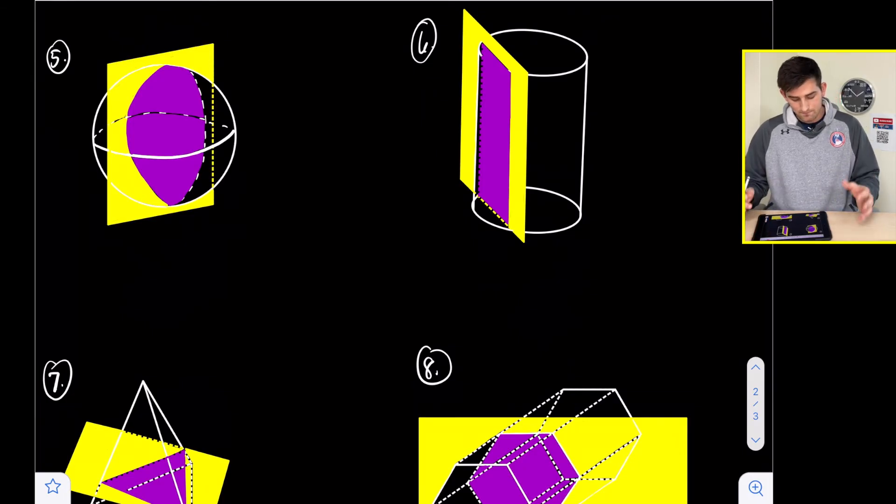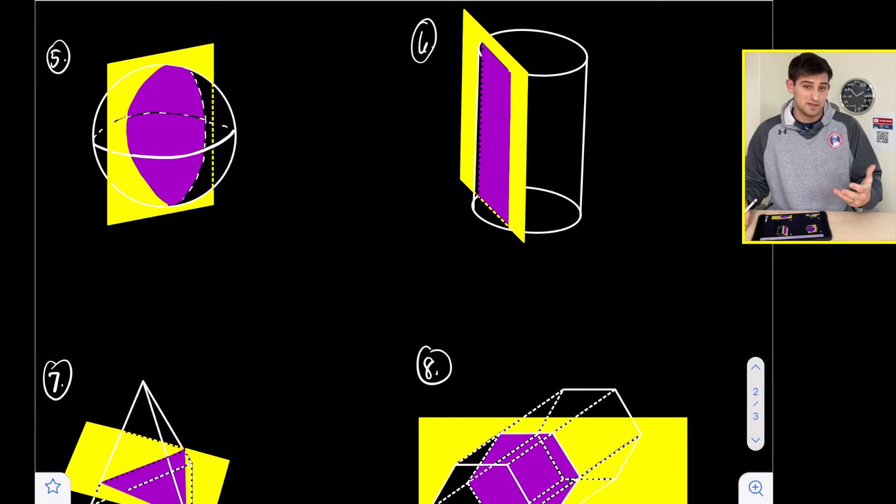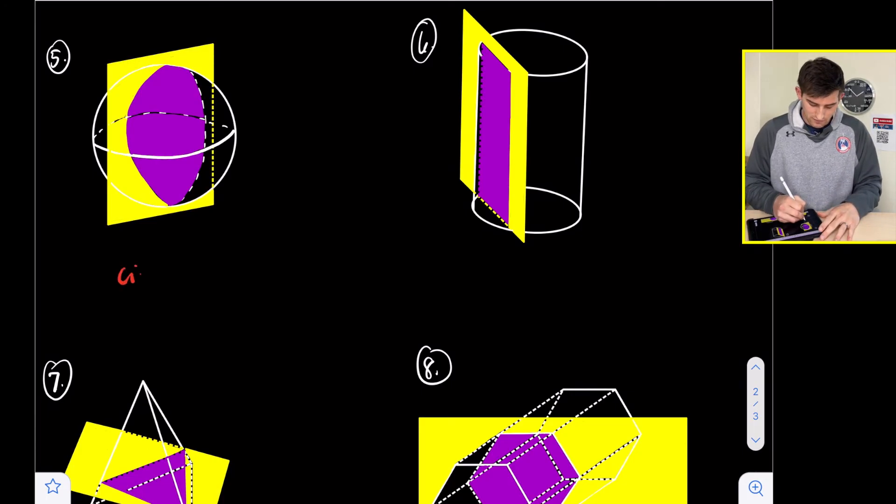Number five, we have a sphere being sliced right down the middle by this plane. So our cross section here is going to be a full circle.